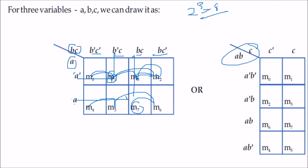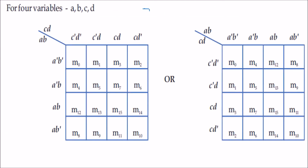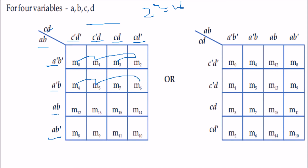For the 4-variable K-map, rows are labeled A-dash B-dash, A-dash B, AB, AB-dash and columns labeled C-dash D-dash, C-dash D, CD, CD-dash. This gives M0 through M15. The cells are arranged so that when moving from one cell to any adjacent cell, only one variable changes — for example M0 to M1: A-dash B-dash C-dash D changes only D.